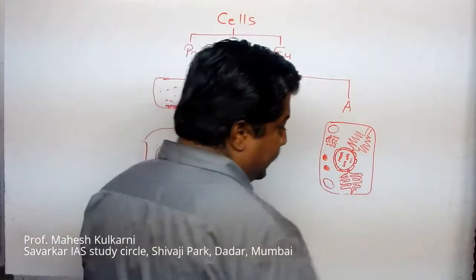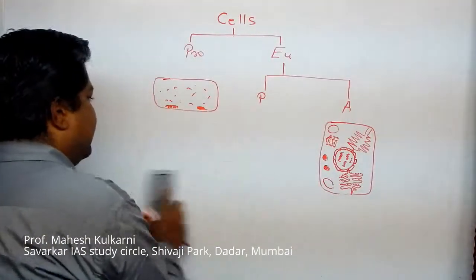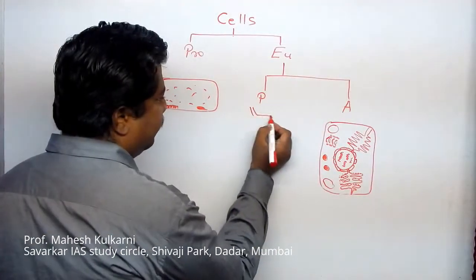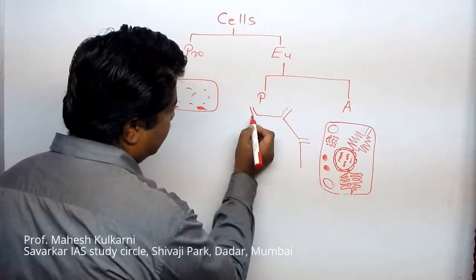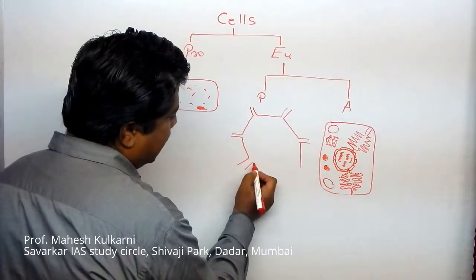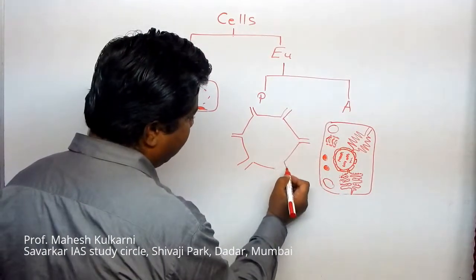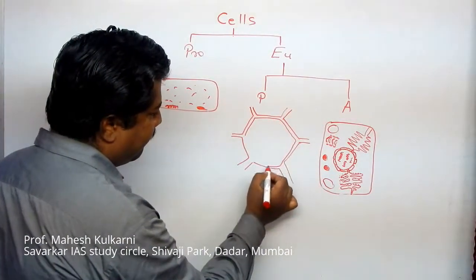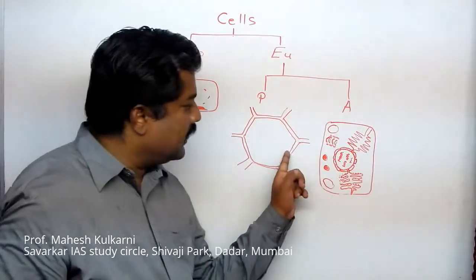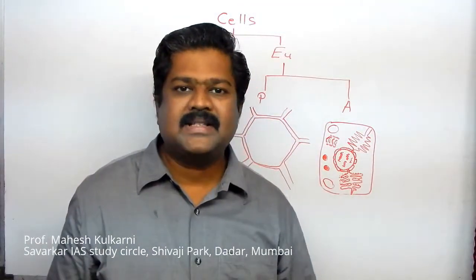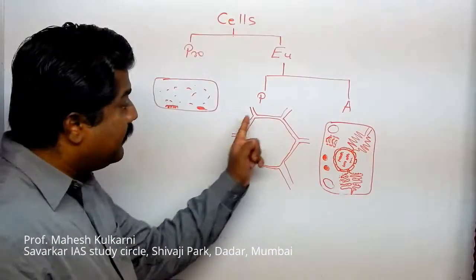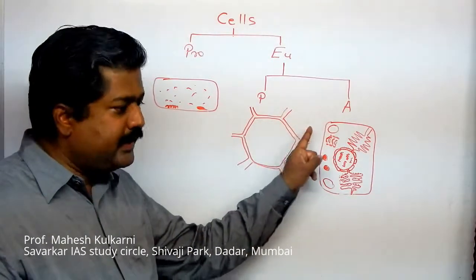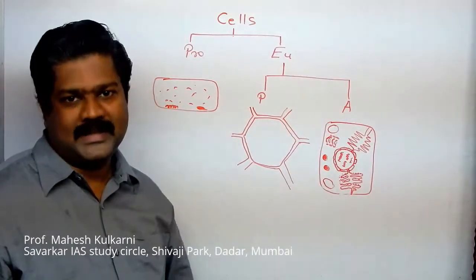Now, if I want to tell you about the plant cell — plant cells are also having a similar structure, but certain changes are there. For example, plant cells are having a somewhat fixed shape, whereas animal cells are not having a fixed shape. So plant cells have a cell wall. The material used for the cell wall is called cellulose. The basic difference between animal cell and plant cell is that plant cells have a cellulose cell wall around them, whereas animal cells don't have a cellulose cell wall.